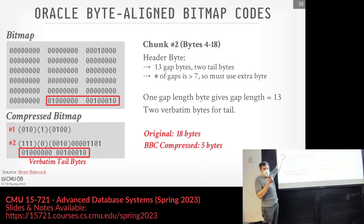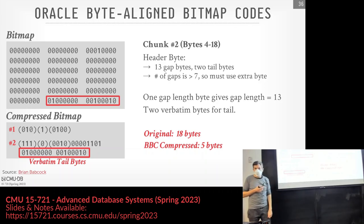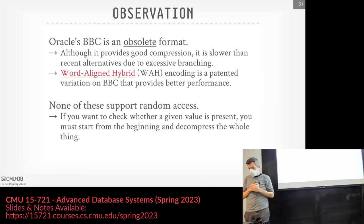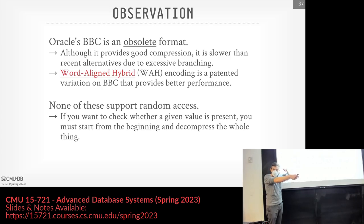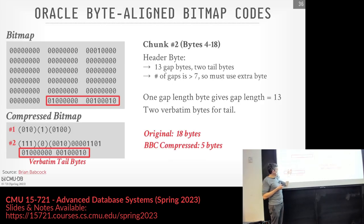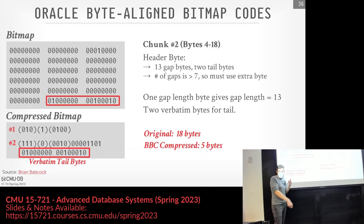A more modern approach is the Roaring Bitmap from Daniel Lemire. The basic idea is that we store 32-bit integers in a compact two-level indexing structure. We split the 32-bit integer space into high 16 bits and low 16 bits. The high 16 bits act as a chunk identifier and the low 16 bits are stored in one of several container types depending on the density: an array container for sparse data, a bitmap container for dense data, or a run-length encoded container. This allows random access, supports SIMD operations, and has much better branch prediction characteristics.